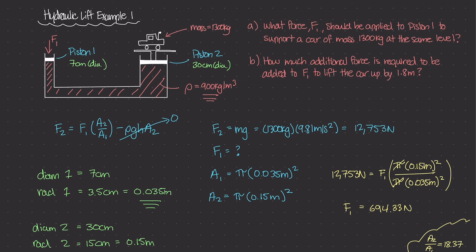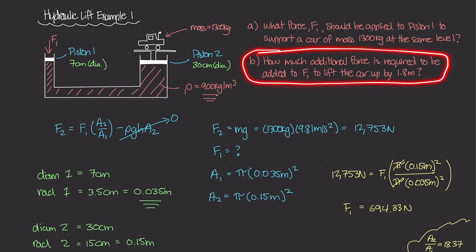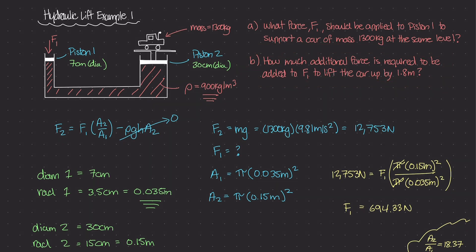That ratio of 18.37 is what we call the force multiplication factor. We can amplify F1 by this factor of 18.37 to get the counter force of 12,753 newtons. That's really the beauty of hydraulic systems and Pascal's principle — it's used to do some really cool things. In part two, we'll look at the second question: how much additional force is required to move the car up by 1.8 meters.